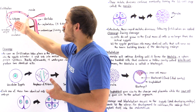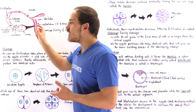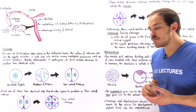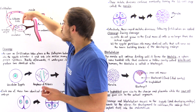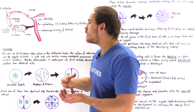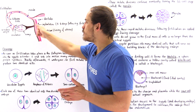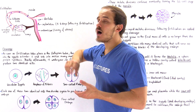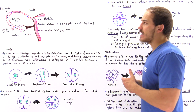We have the ovary, the fallopian tube, and the uterus. Inside the ovary we have the development of the oocyte, which is found inside the follicle. The primary follicle becomes a secondary follicle, and in the process we produce estrogen. The estrogen initiates the thickening of the endometrium — the lining of the uterus — that is needed for implantation to actually take place.